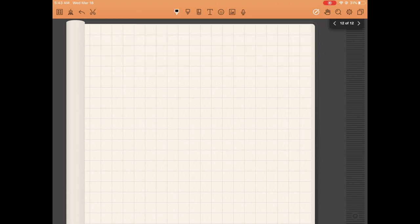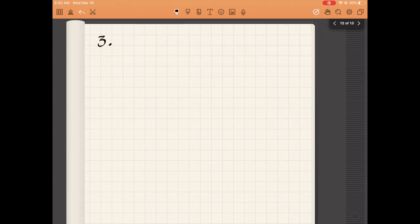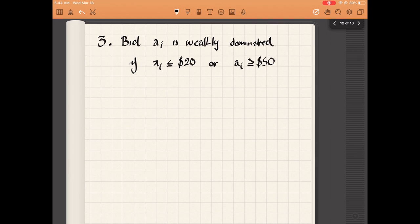For problem three, a bid is weakly dominated if and only if it's either less than the reserve price, which is 20, or greater than the valuation, which is 50. This was a first price auction with a reserve price. If you bid less than the reserve price, you never win. If you bid greater than your value, you always get negative utility if you win.